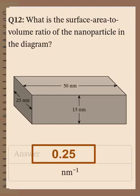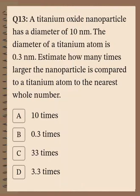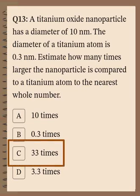Question number 13: A titanium oxide nanoparticle has a diameter of 10 nanometers. The diameter of a titanium atom is 0.3 nanometers. Estimate how many times larger the nanoparticle is compared to the titanium atom, to the nearest whole number. Comparing 10 to 0.3, the titanium oxide nanoparticle is approximately 33 times larger than the titanium atom.